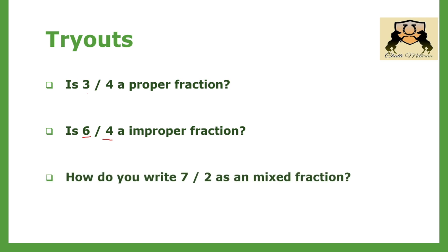How do you write 7 by 2 as a mixed fraction? First, divide 7 by 2. You get 3 with a remainder of 1, since 3 multiplied by 2 is 6 and 7 minus 6 is 1. So 3 is the whole number, 1 is the remainder, and 2 is the divisor. The answer is 3 and 1 by 2.